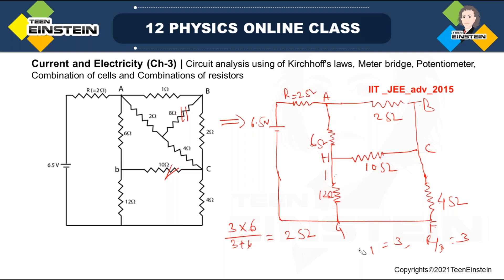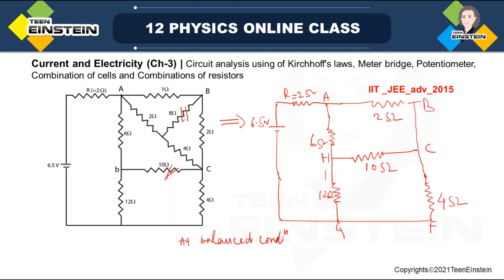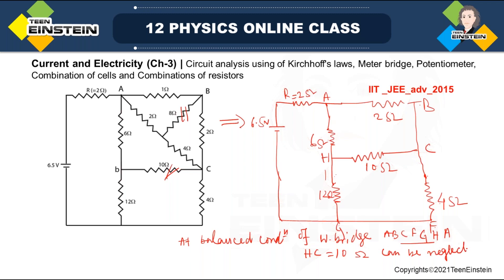At balance condition of the Wheatstone bridge A-B-C-F-G-H-A, the 10 ohm resistor HC can be neglected — there will be no current passing through it. So I can just strike this out.